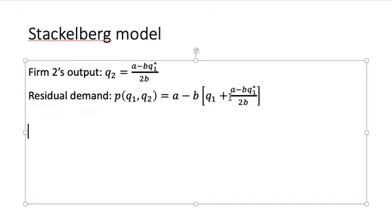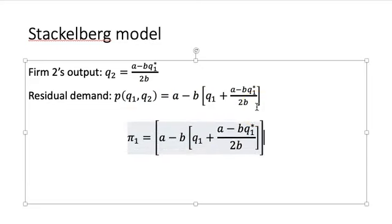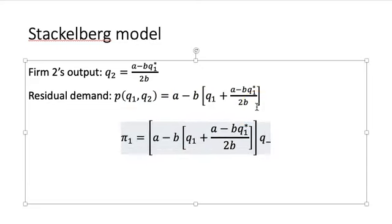The profit function for firm one, let's denote it as π1. It's going to be equal to this entire price function, we need another bracket here, and multiply it with Q1.